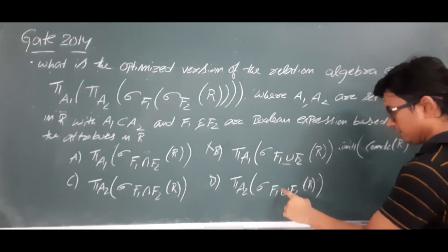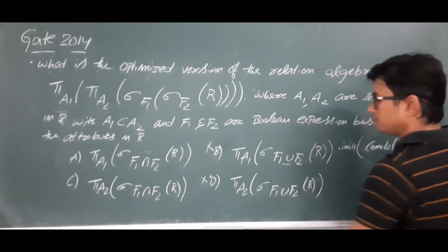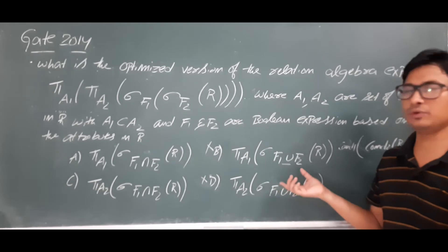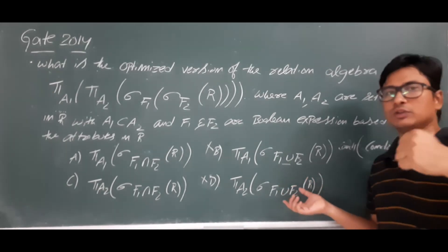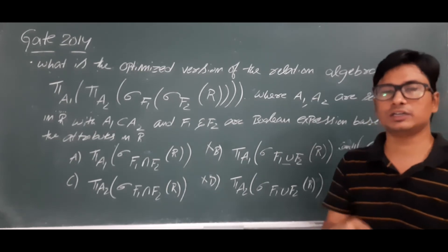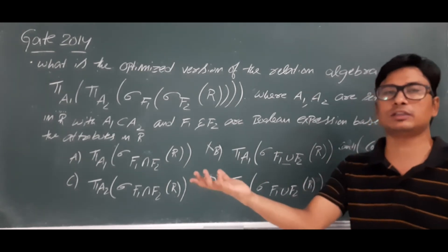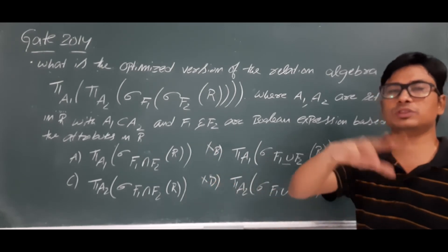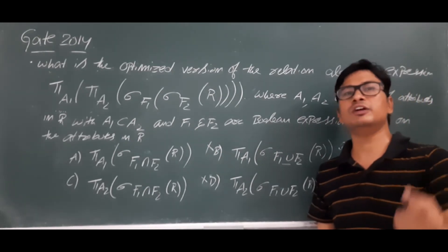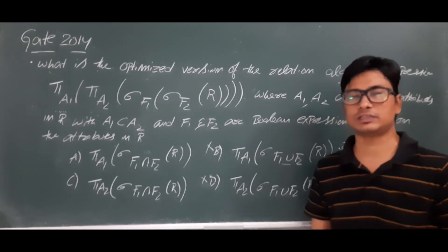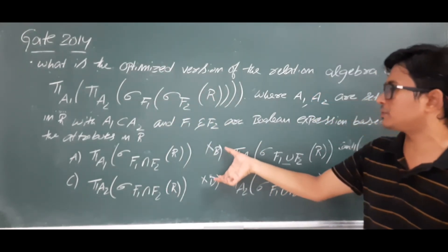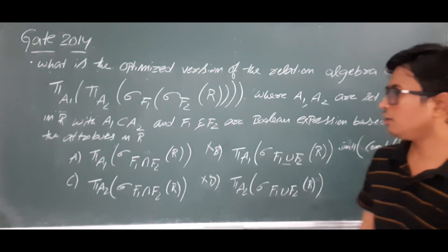Options B and D say union, meaning condition f1 OR f2 — where any one condition being true gives a result. But our nested selection means AND, not OR. So I can eliminate option B and option D. The correct combined condition is f1 AND f2, because both conditions must be true to get output.